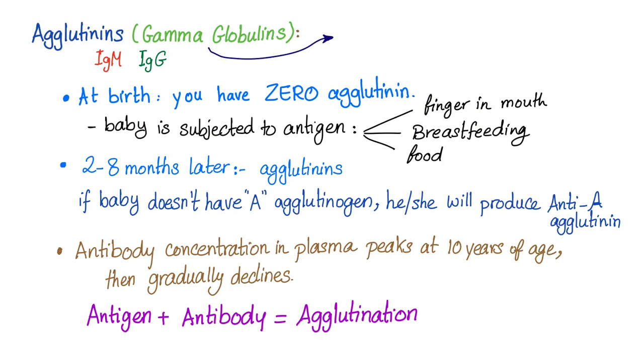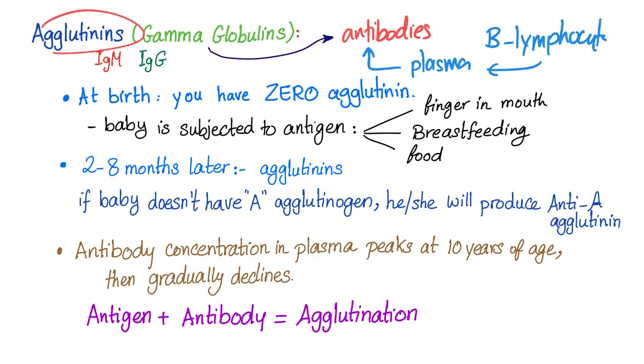Agglutinins: antibodies against the antigens. These agglutinins are gamma globulins. Question. Where are these gamma globulins formed? Where is the factory? If you answer the liver, you're crazy. If you answer the immune system, you're absolutely right. Remember, agglutinins are antibodies. If you know anything about white blood cells, you know that there is the B lymphocyte. The B lymphocyte will have plasma cells. They are a special type of B lymphocytes. Plasma cells will produce antibodies. So where is the factory? Answer bone marrow.